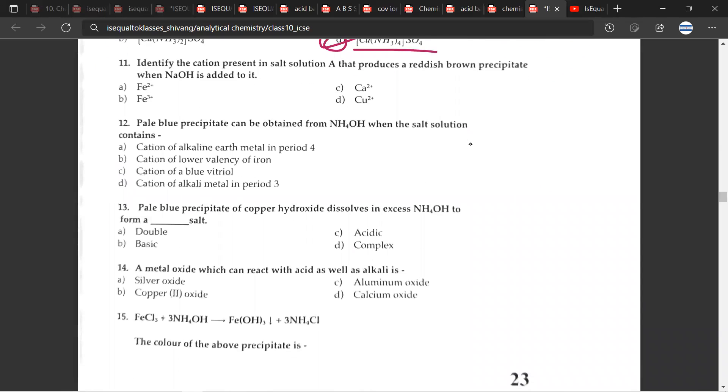Let's move on. The 11th question, identify the cation present in salt solution A that produces a reddish brown precipitate when NaOH is added to it. So what would be the correct option? So it would be Fe3+, as I said before, when you notice a reddish brown precipitate, be sure that the cation that is involved in this would be Fe3+. If it's dirty green, then it would be Fe2+.